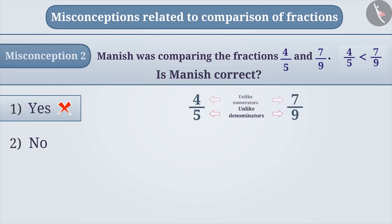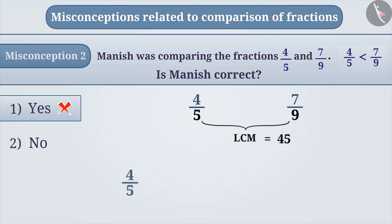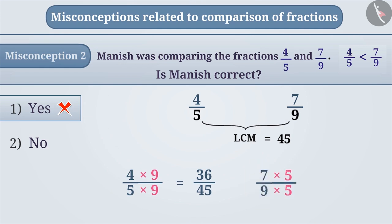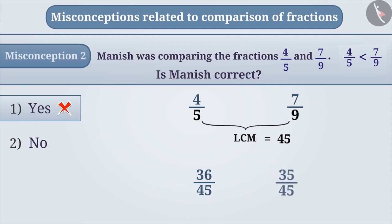Since neither the numerators nor the denominators are equal, we will have to make the denominators equal — that means making the size of the parts equal. We will do this using LCM. The LCM of 5 and 9 is 45. To make the denominator of 4/5 equal to 45, we multiply the numerator and denominator by 9 to get 36/45. Similarly, to make the denominator of 7/9 equal to 45, we multiply the numerator and denominator by 5 to get 35/45.